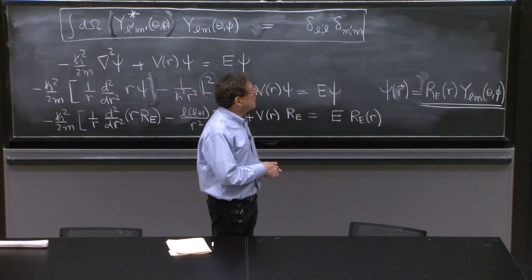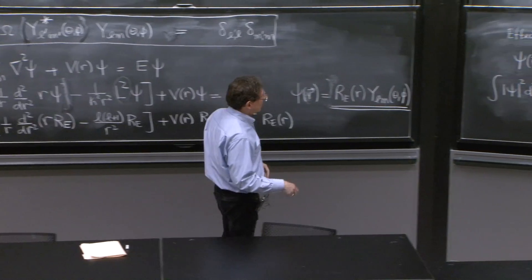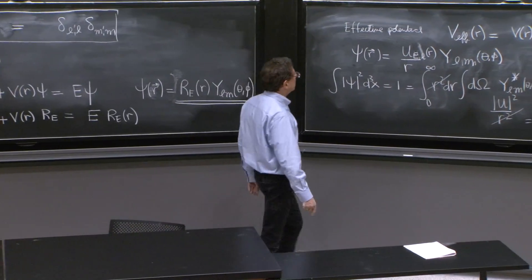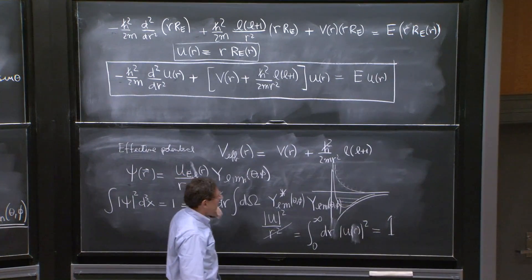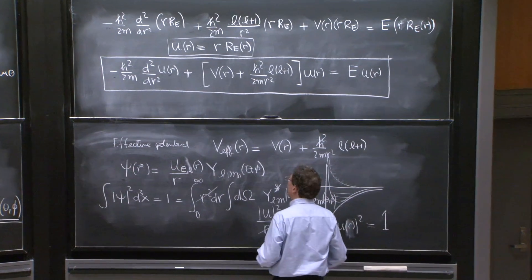We've reduced it to a one-dimensional problem. We have to solve those. Each time somebody gives you a spherical potential, you look at that equation, the radial equation, and try to solve for u's. If you solve for u's,